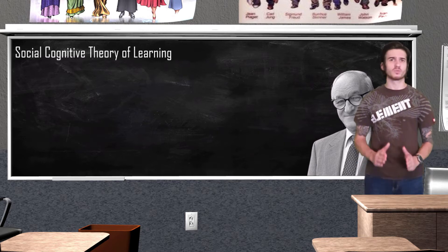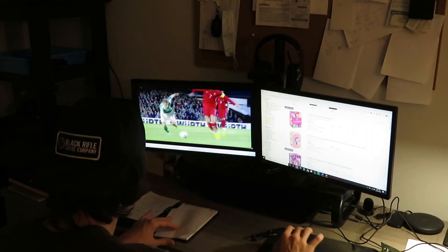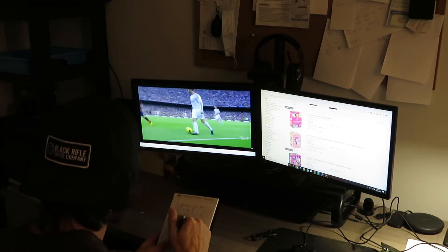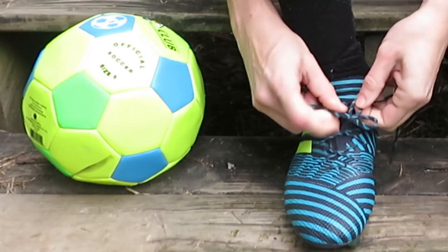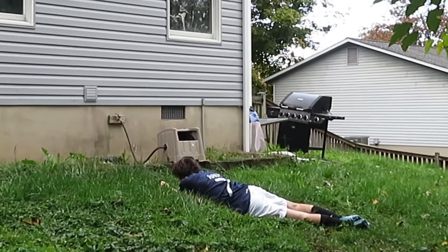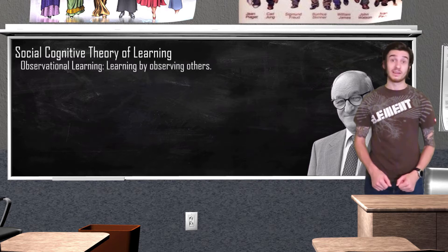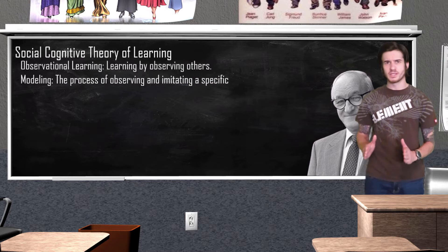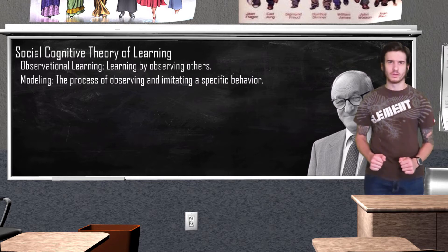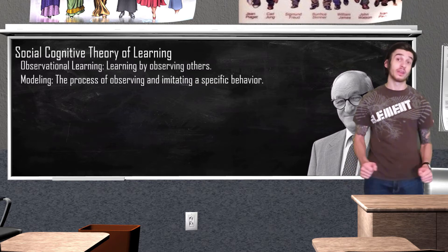Observational learning is going to be just what it sounds like: learning by observing others. I'm actually going to give you a sports example here. Let's say I want to learn a new soccer move, so I go onto YouTube and type in 'Cristiano Ronaldo cool soccer moves.' I watch the video a couple of times until I think I have it down, and then I go outside and try to repeat this behavior. Cristiano acted as a model for me in my attempt to observe and imitate his behavior. Modeling, which is a process of observing and imitating behaviors, plays a huge role in observational learning.